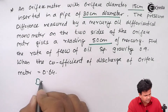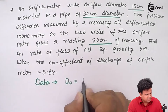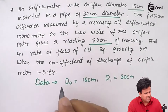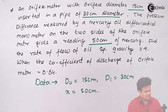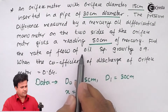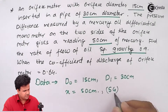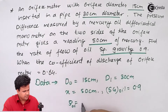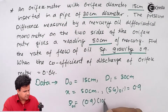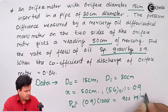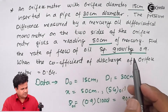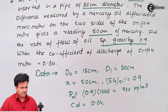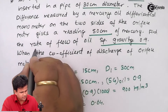So let us write down what we have. The diameter of the orifice is 15 centimeters, the diameter of the pipe is 30 centimeters, and x equals 50 centimeters. We have to find the flow rate of the oil. The specific gravity of oil is 0.9, which means the density of oil is 900 kg per meter cube, and the coefficient of discharge CD is 0.64.